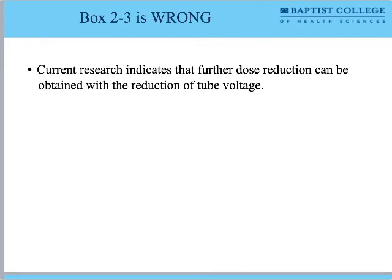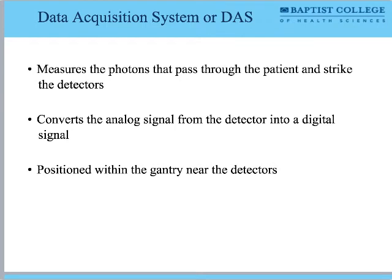One thing to point out: Box 2.3 in your textbook is wrong. It claims high KVP somehow increases patient dose but reduces heat load — that's incorrect or conflicting. I checked, and both textbooks say the same wrong thing, so just cross that out.